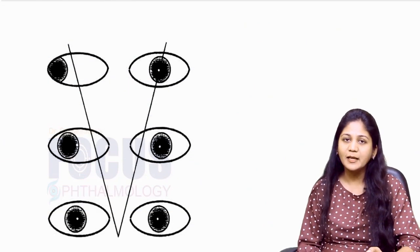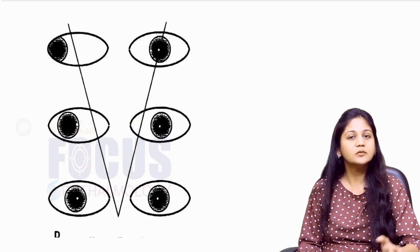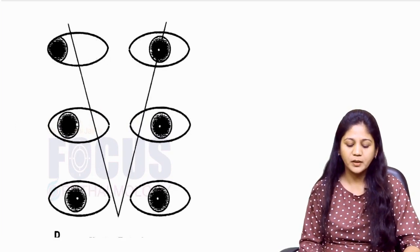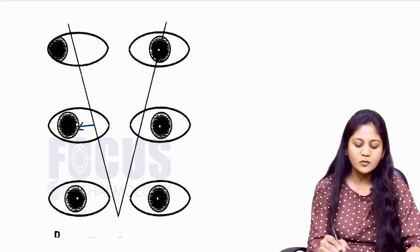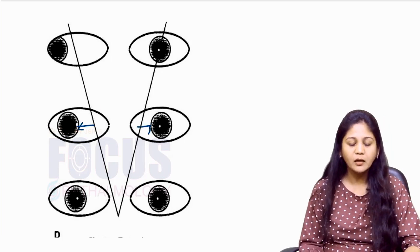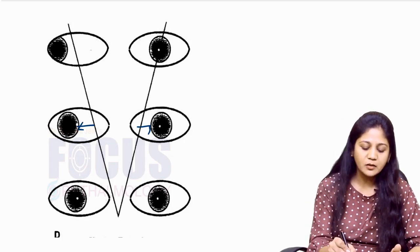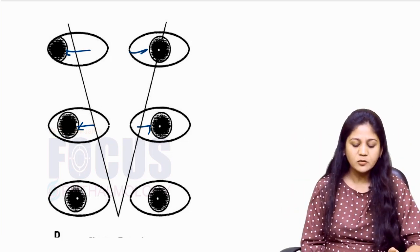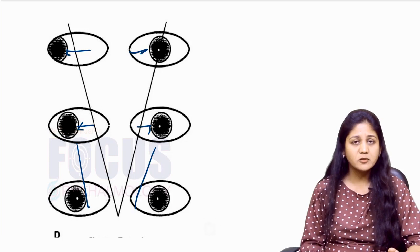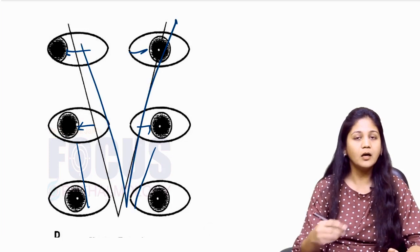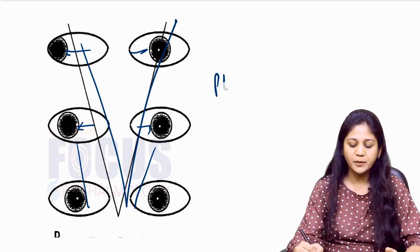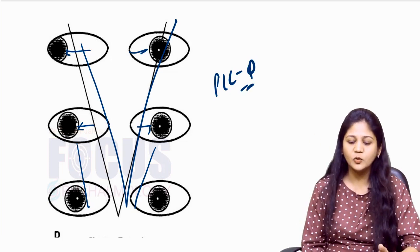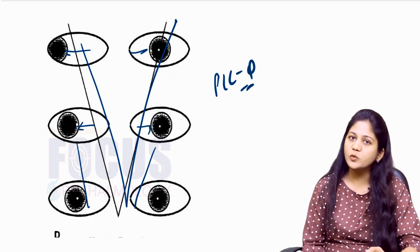Let us see this with the help of a picture. Here we typically have a V pattern exotropia where in primary gaze there is significant exotropia, but this exotropia increases enormously when the patient looks up, and slightly decreases when the patient looks down, creating a V pattern. This is a picture question — you can be shown such a pattern and asked which type of squint it is.